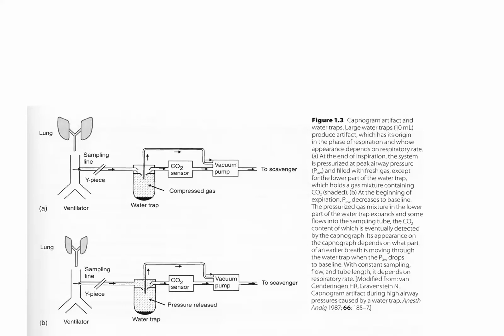Sidestream capnometers have problems associated with them, one of the more interesting being related to the water trap. During inspiration, the system is pressurized, creating an area above the compressed gas that is devoid of CO2, while compressed gas below contains CO2, indicated by the gray shading in the figure. When pressure is released, that compressed gas comes back up and enters the sampling tubing, potentially producing an artifact in the value reported by the capnometer.